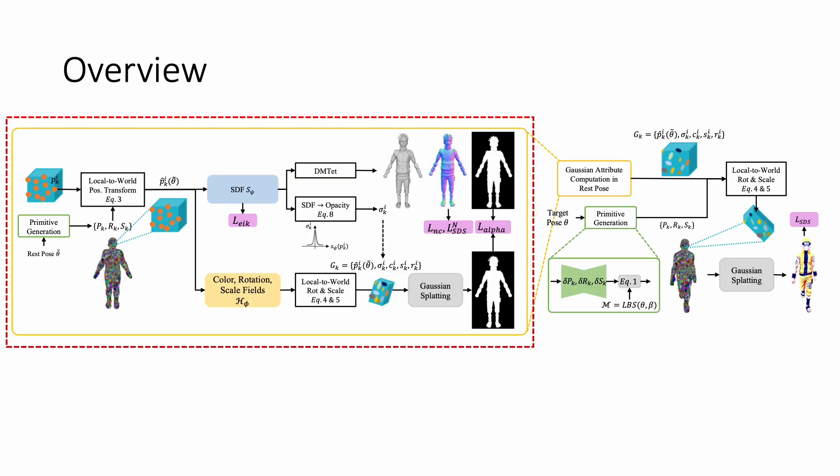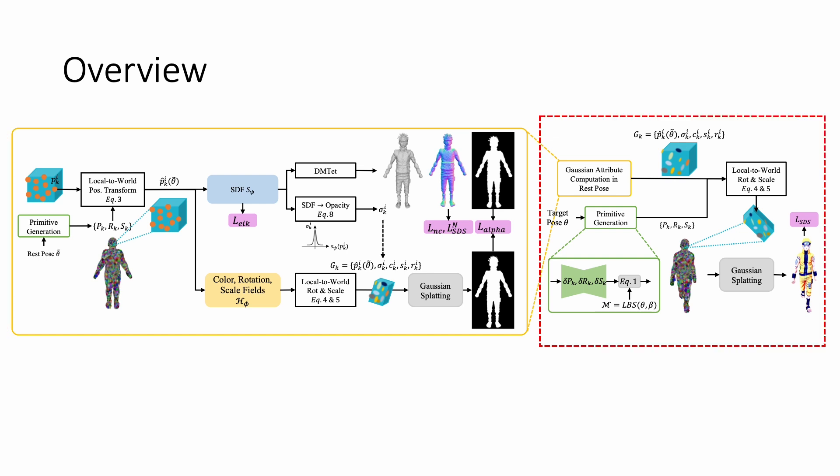The first process computes the color, rotation, scaling and opacity of each 3D Gaussian under the rest pose. And the second process transforms the 3D Gaussians given a target pose and renders the transformed Gaussians via splatting.